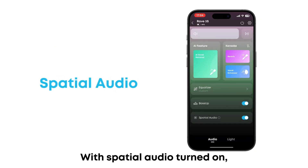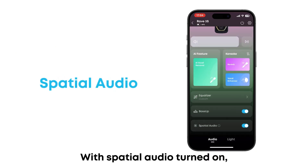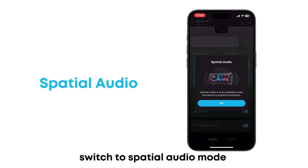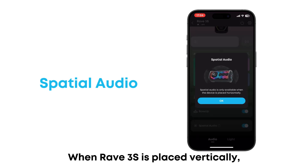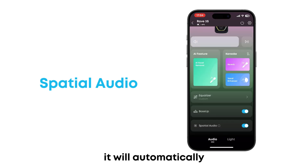With spatial audio turned on, RAVE3S will automatically switch to spatial audio mode when placed horizontally. When RAVE3S is placed vertically, it will automatically switch to speaker array mode.